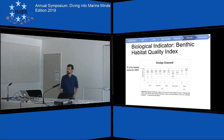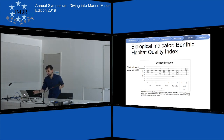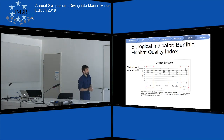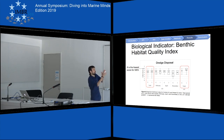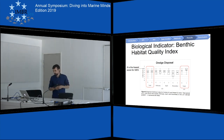For benthic habitat quality, BHQ, it was the other way around — 6 is the lowest score for good environmental status, and I was not even reaching that lowest threshold. I cannot say these results are significant or that I can even use them.